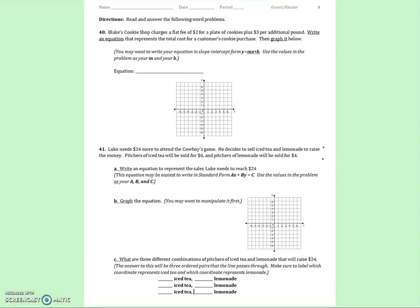40 and 41 are word problems, but they use the same exact skills that we've been doing. Read number 40 and try it on your own before looking at the equation that I write. The problem says Blake's cookie shop charges a flat fee of $2. Flat fee means a one time fee for a plate of cookies, plus $3 per additional pound. Write an equation that represents the total cost for a customer's cookie purchase. So what I'm going to write the equation, I'm going to say y, the total cost equals $3 per pound plus our flat fee of $2. And then we just graph it.